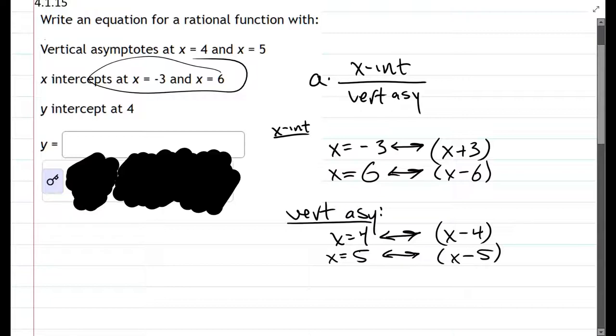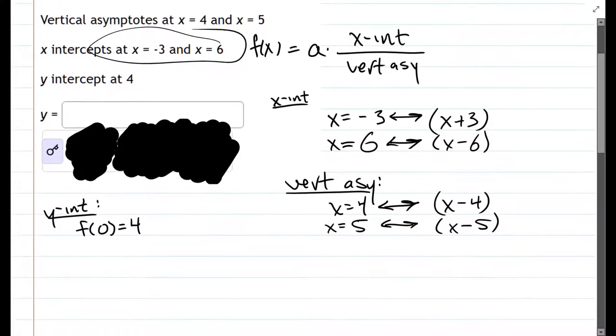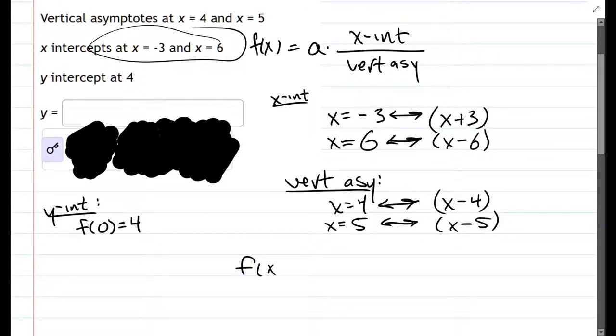And the last is the y-intercept. And what we're going to do with this is just wait until the very end. So that means that when we write this function, let's call it f of x. Y-intercept means when you take a zero and f it, you're going to get four as your y-value. All right, so let's go ahead and construct our function.